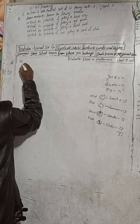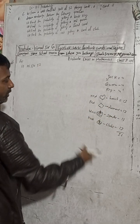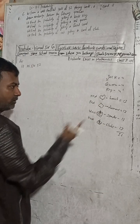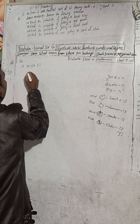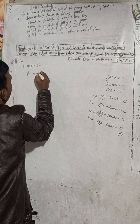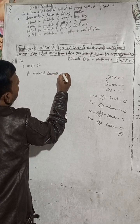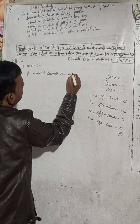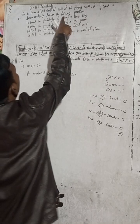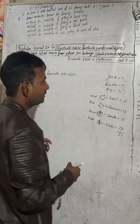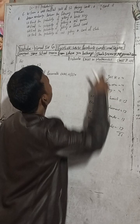The first question asks: what is the probability of getting a black king? First, the sample space n(S) is 52, since there are 52 cards total. Now we find the number of favorable cases. How many black kings are there? As I told you, there are 4 kings in total.